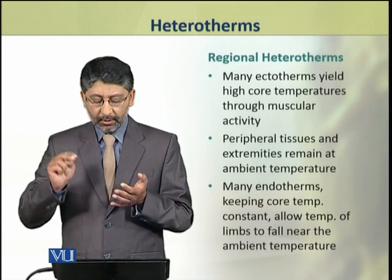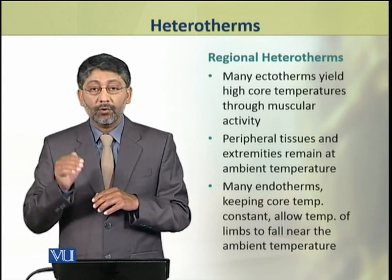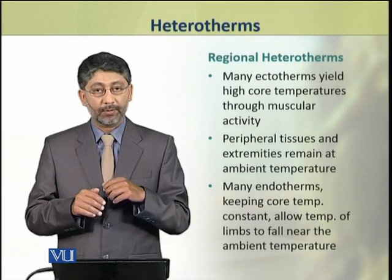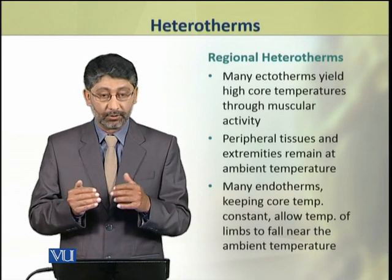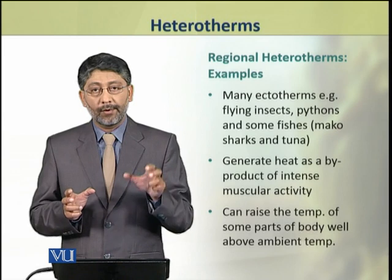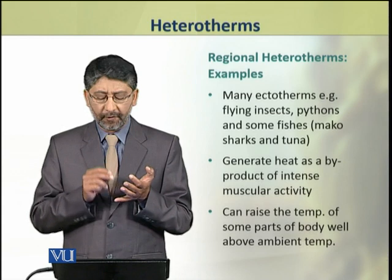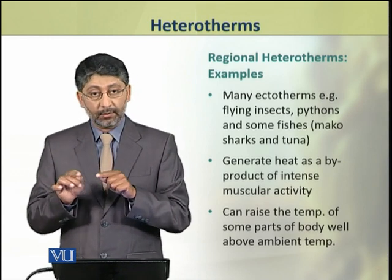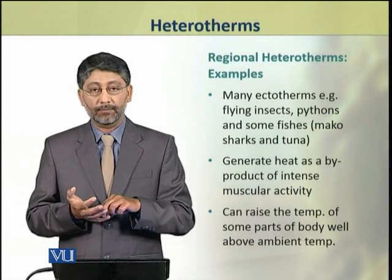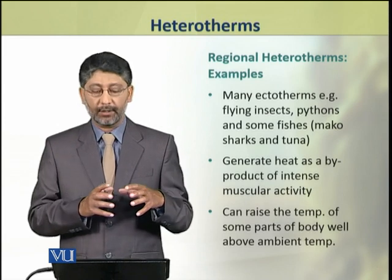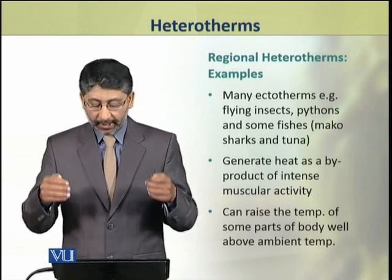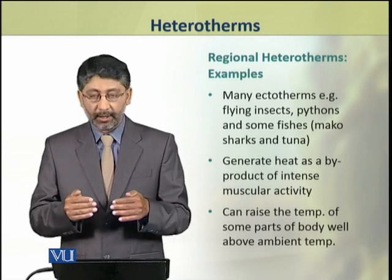Many endotherms keep their core temperature constant while allowing the temperatures of their limbs and extremities to fall near the ambient temperature. Examples of regional heterotherms include many ectotherms such as flying insects, among the reptiles some pythons, and some fishes such as mackerel sharks and tuna, which generate heat as a by-product of their muscular activity. As a result of this intense muscular activity, they can raise the temperature of some parts of their body well above the ambient temperature.